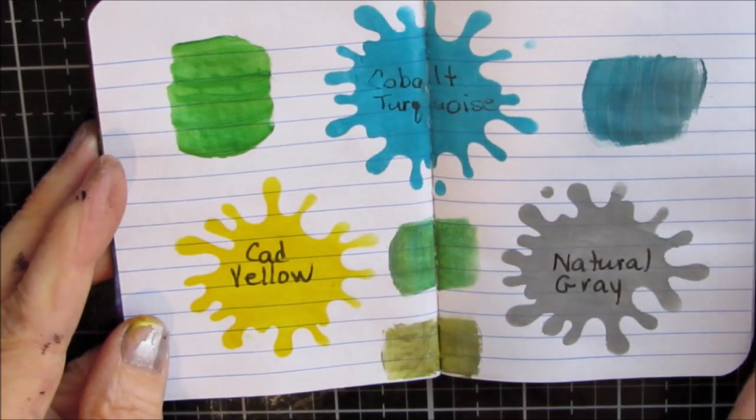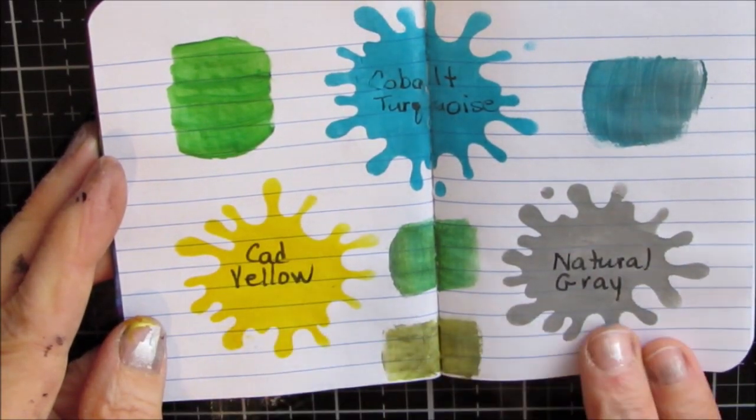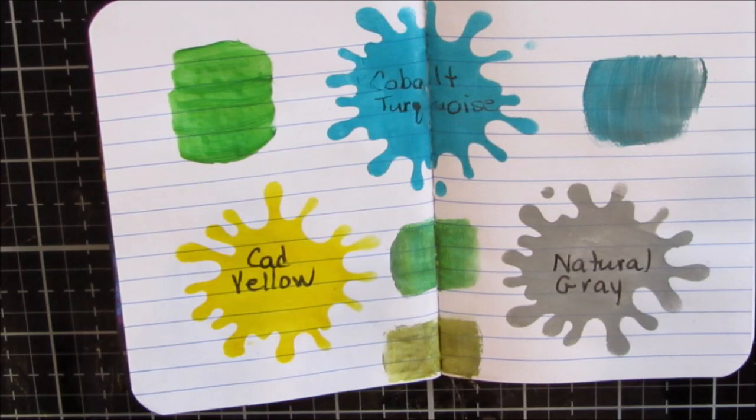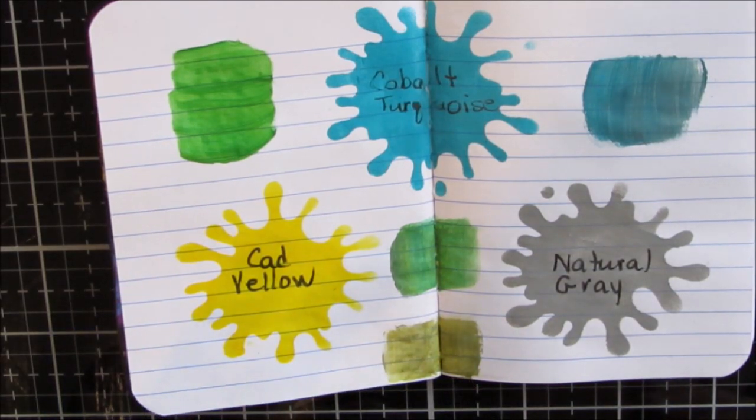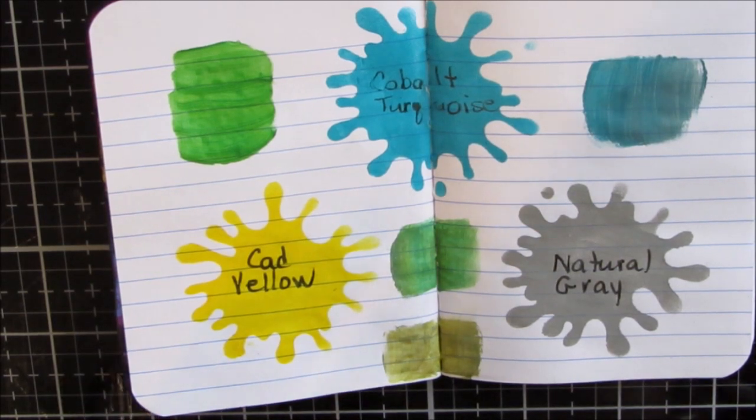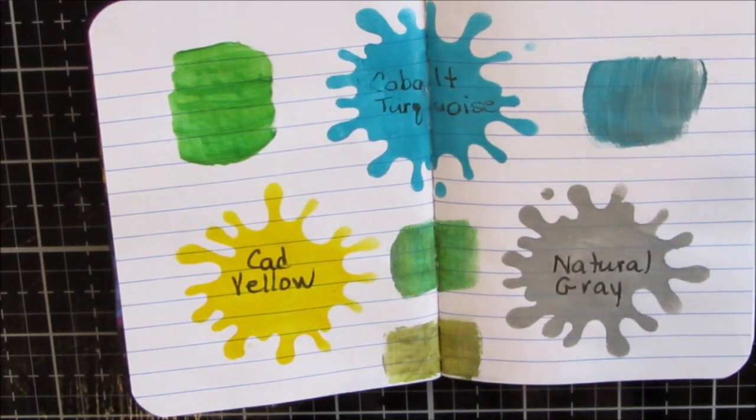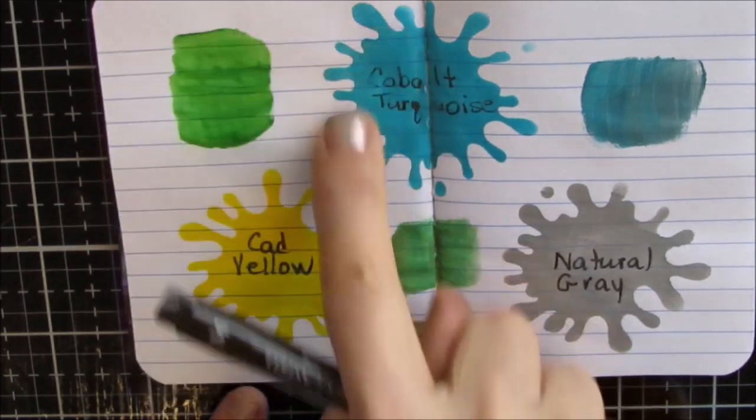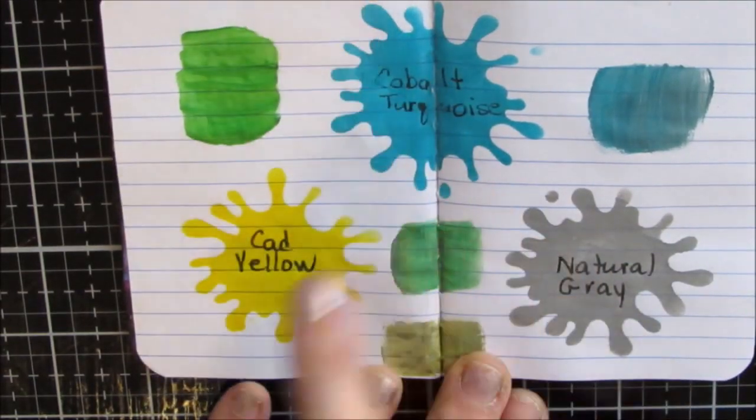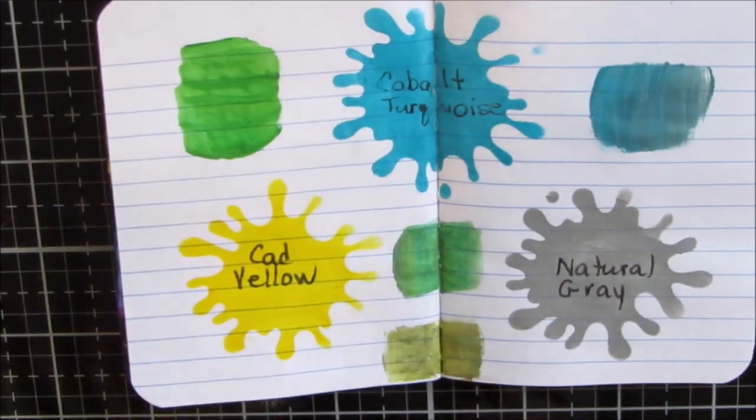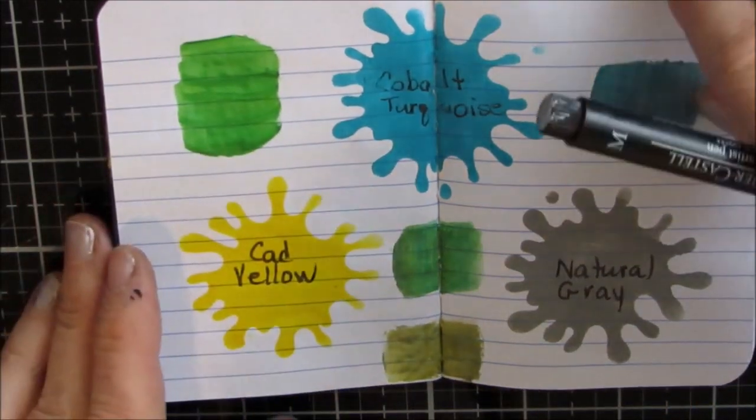And there you have the first color challenge. Cobalt, turquoise, or teal, cad yellow, natural gray. The colors you get are going to vary again, depending on the exact brand shade that you pick. And then again, you can take the cobalt, turquoise, mix white with it. You can mix gray, black with it, and you're going to get a different hue. So there is the one challenge.